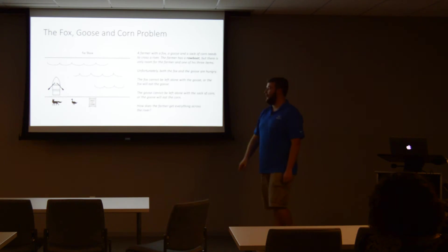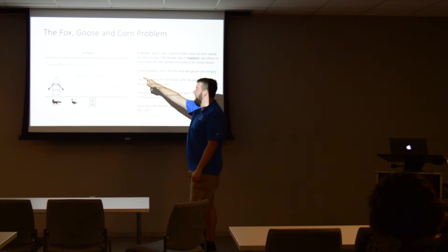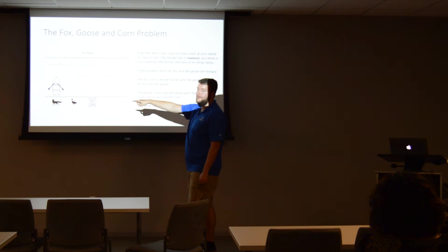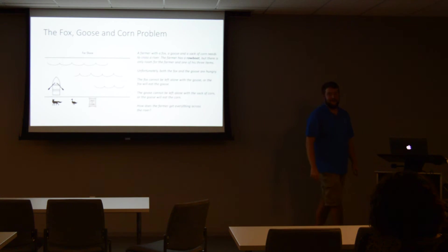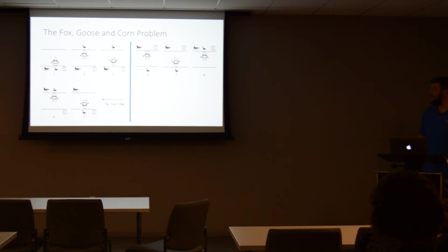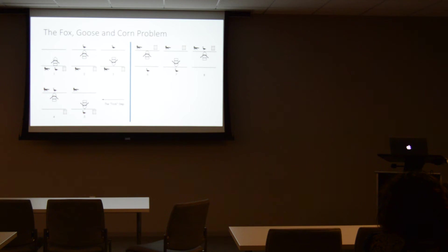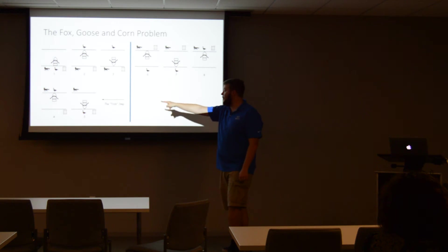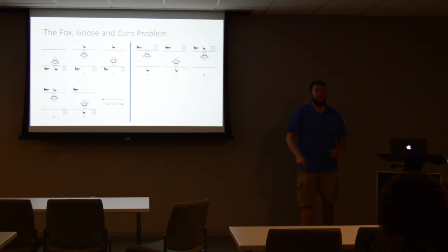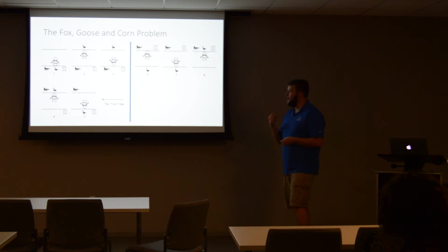What happens is: we have our goose on the far shore. Then we take the fox across, then we bring the goose back, then we take the corn across. Does everybody understand that? I'll post these slides to the meetup so you can read over them, if you want to show your friends. There's the trick — that one right there where we bring the goose back. Most of you wouldn't have thought to do that. What I was doing was working with you and trying to restate the problem to figure out the trick.